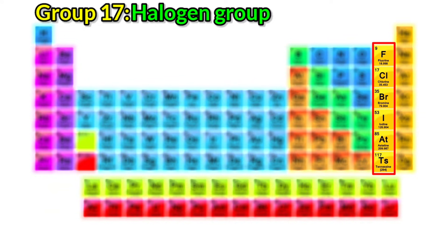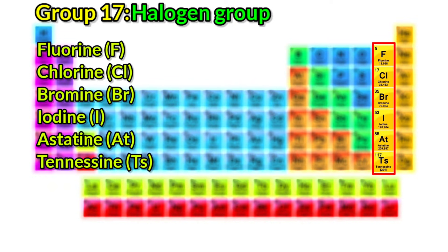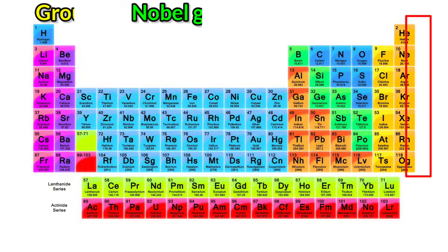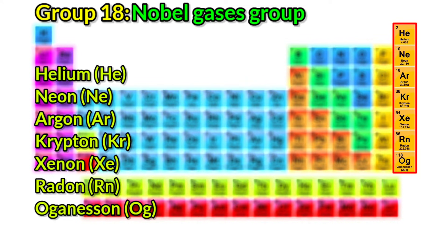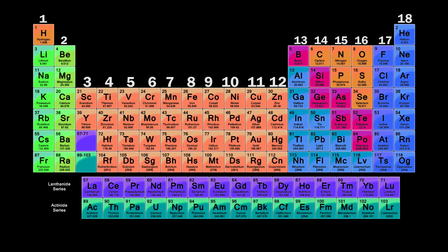Group 16: Oxygen group. The elements included in the oxygen group are oxygen, sulfur, selenium, tellurium, polonium, and livomerium. Group 17: Halogen group. The elements included in the halogen group are fluorine, chlorine, chromine, iodine, astatine, and tennyson. Group 18: Noble gases group. The elements included in the noble gases group are helium, neon, argon, krypton, xenon, radon, and organosin.